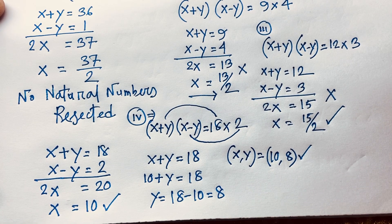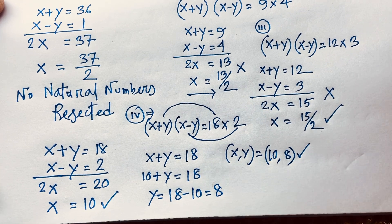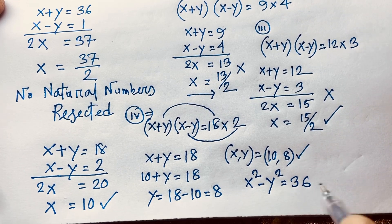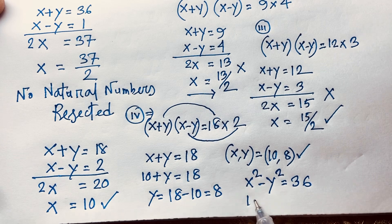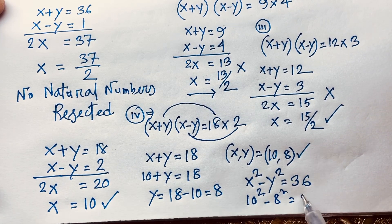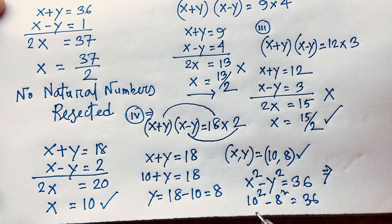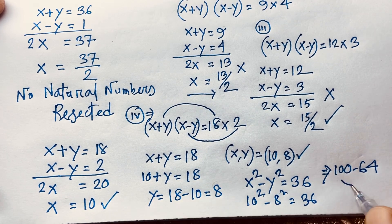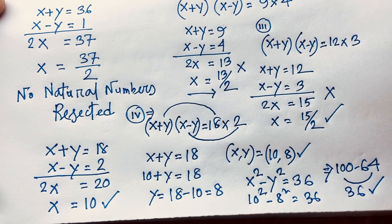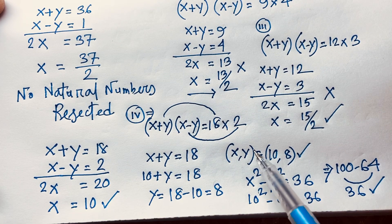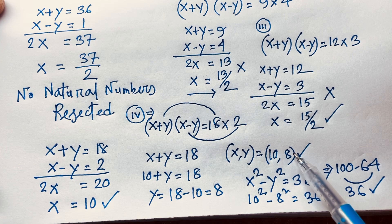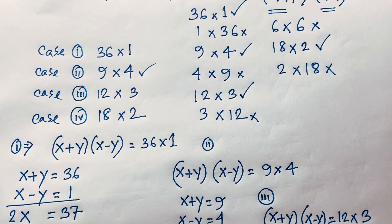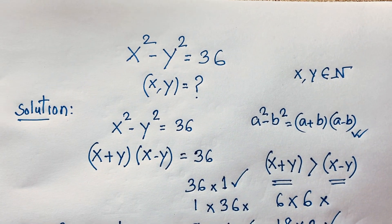Let's verify: x squared minus y squared = 10 squared minus 8 squared = 100 minus 64 = 36. The left-hand side equals the right-hand side, confirming our answer. So x and y equal 10 and 8. Thank you all — if you enjoyed this video, please subscribe to my channel for more interesting videos. Goodbye, take care!